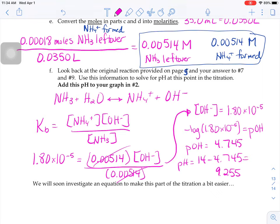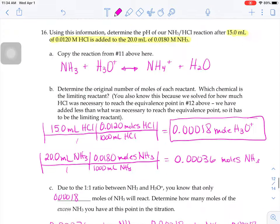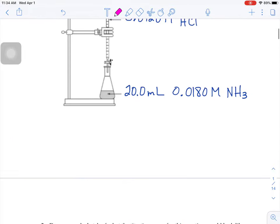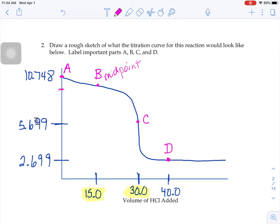It says go back to your graph, put that pH value on your graph. 9.255. So here it is right here at our midpoint, 9.255.